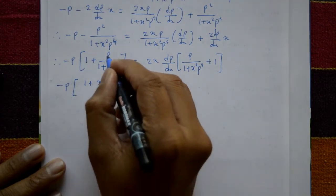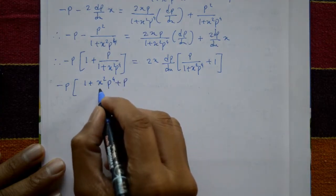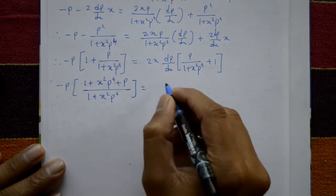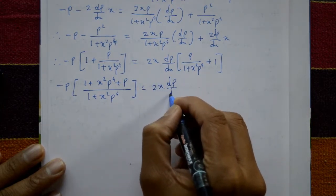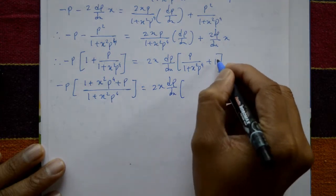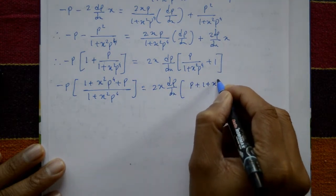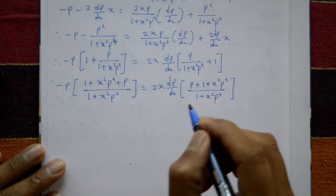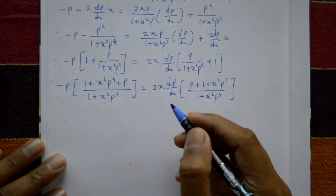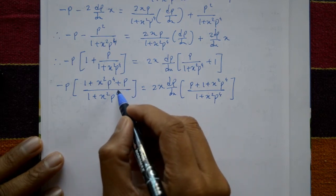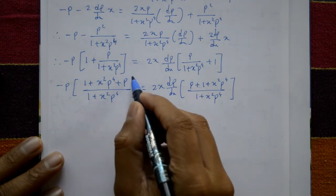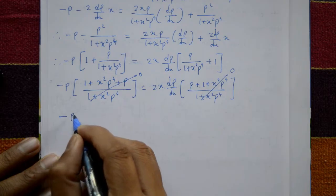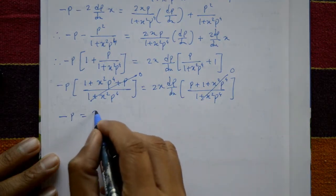Cross multiply: on the left, minus p times 1 plus x squared p raised to 4 plus p, divided by 1 plus x squared p raised to 4. On the right, 2x dp/dx times p plus 1 plus x squared p raised to 4, divided by 1 plus x squared p raised to 4. Both sides cancel the denominator, leaving minus p equals 2x dp/dx.